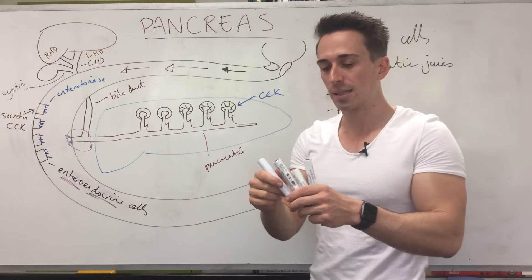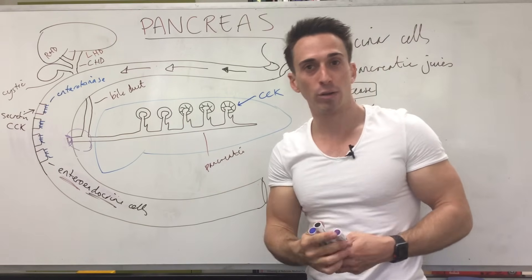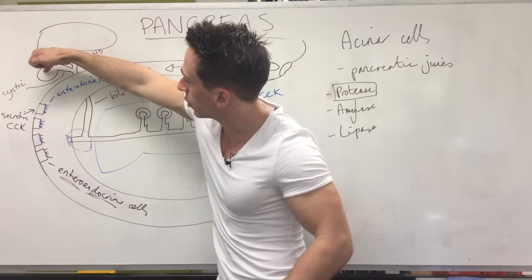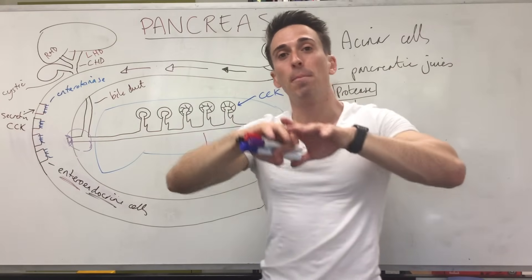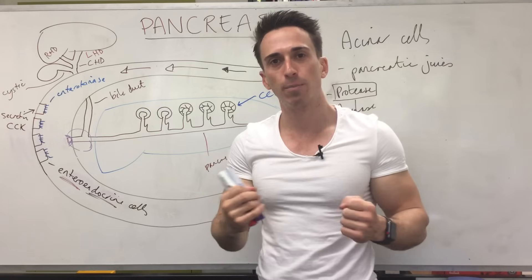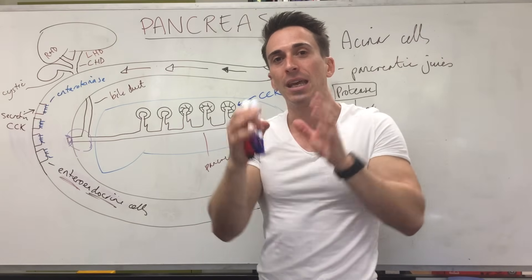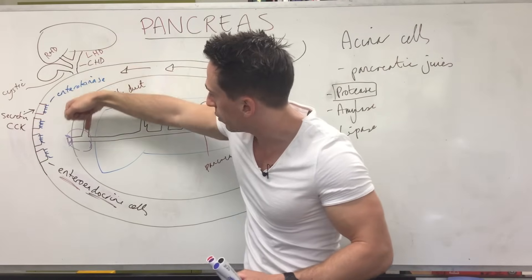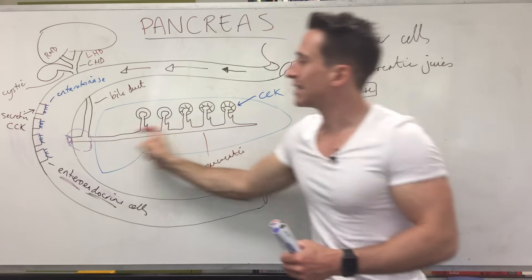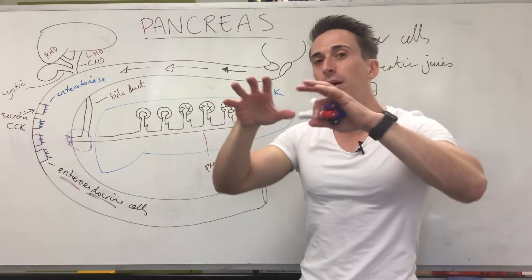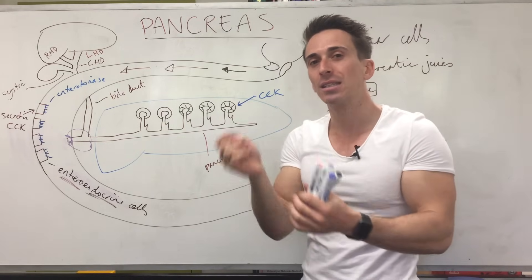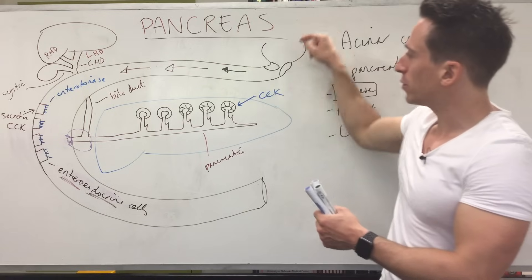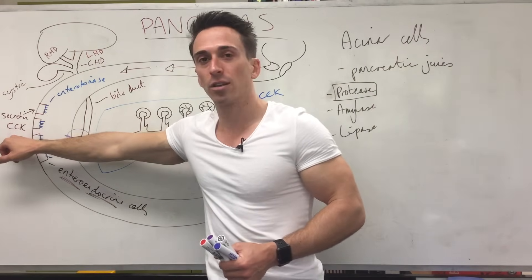The reason proteases are inactive in the pancreas is so they don't digest the pancreas itself. For certain diseases like pancreatitis, the two major causes are alcohol abuse and gallstones blocking the pancreatic duct. Bile in the gallbladder emulsifies fat, but one major component of bile is cholesterol. Too much cholesterol can crystallize and form stones that block the duct, causing pancreatic juices to back up, activate prematurely, and start digesting the pancreas — which is dangerous.